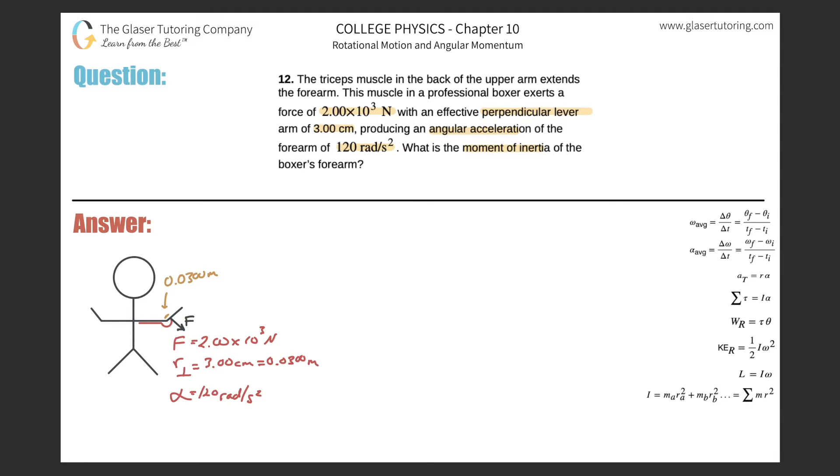So we have a torque in the problem. How do you calculate torque? Remember back to last chapter. Torque is simply equal to the force applied multiplied by the perpendicular lever arm, or the distance, the perpendicular distance between this force vector and the axis of rotation.